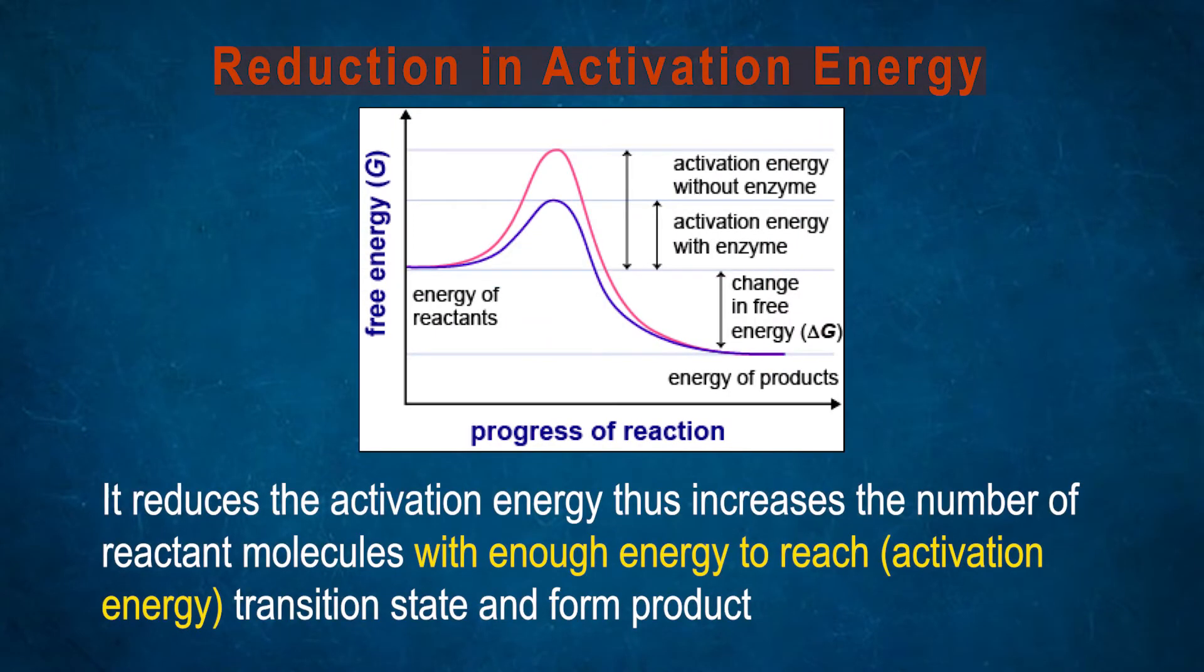It reduces the activation energy, thus increasing the number of reactant molecules with enough energy to reach and cross the activation energy barrier. The transition state can be easily formed and ultimately the product can be formed.